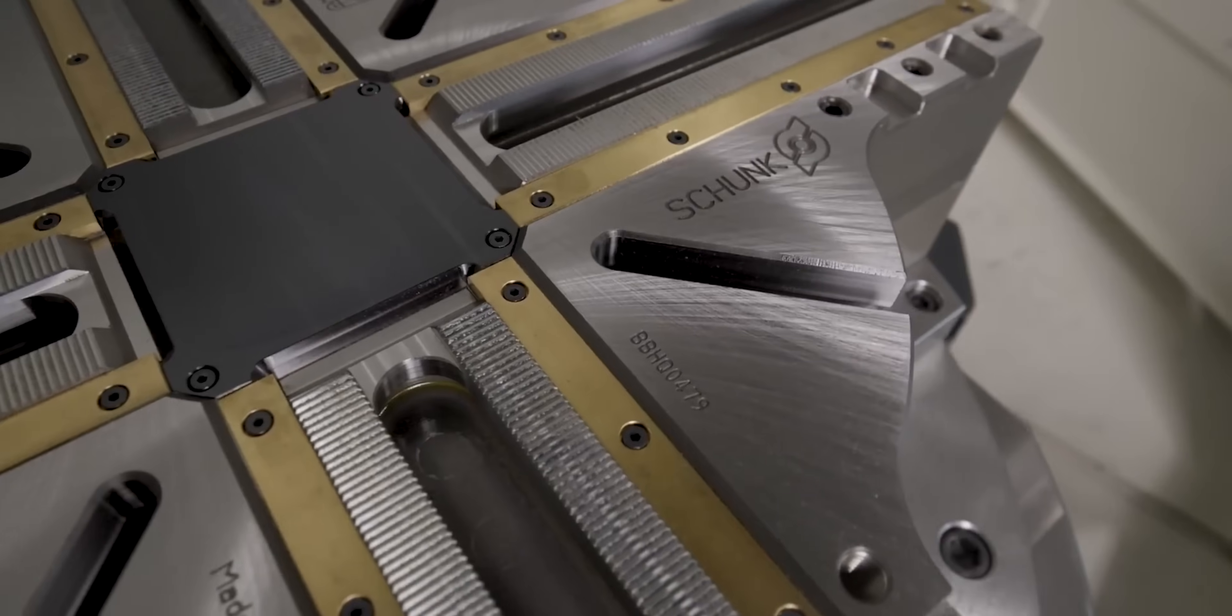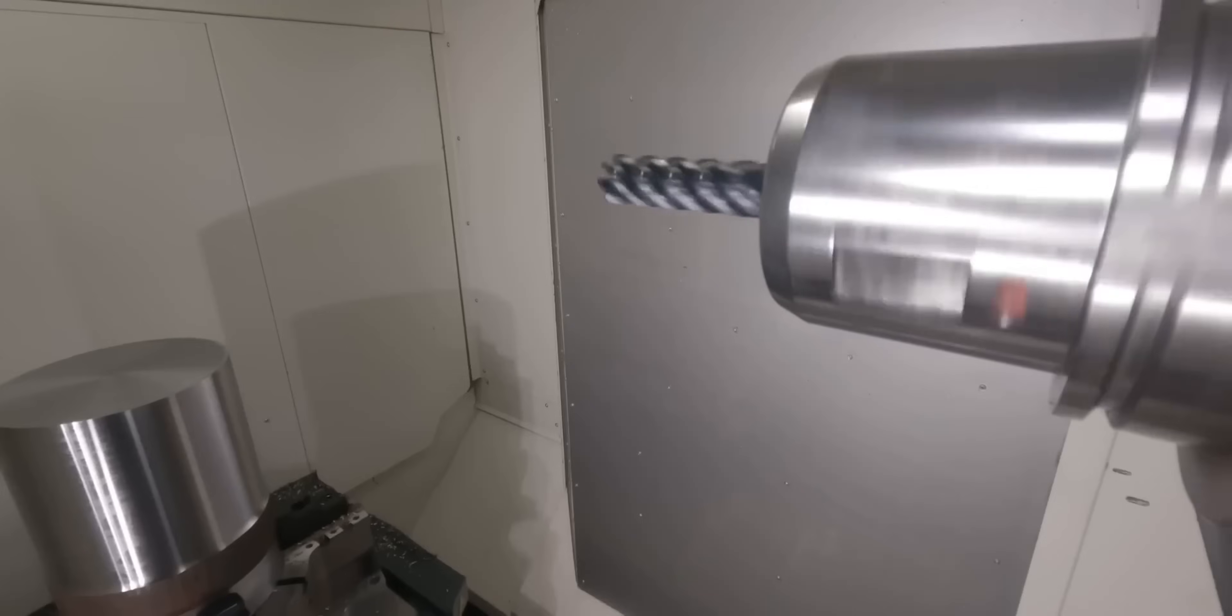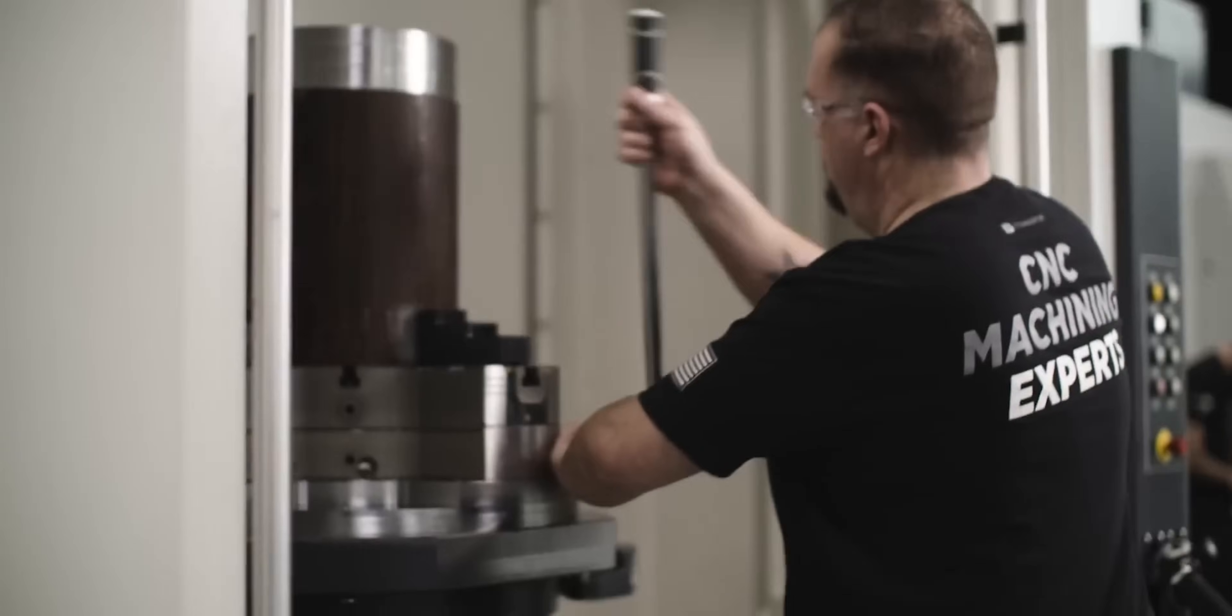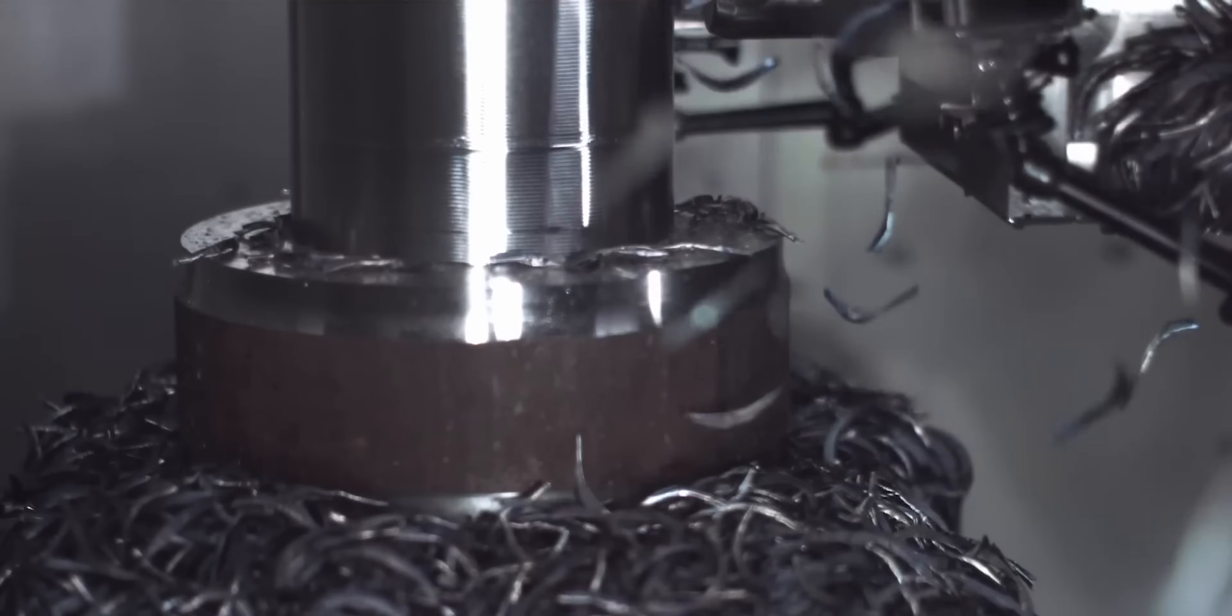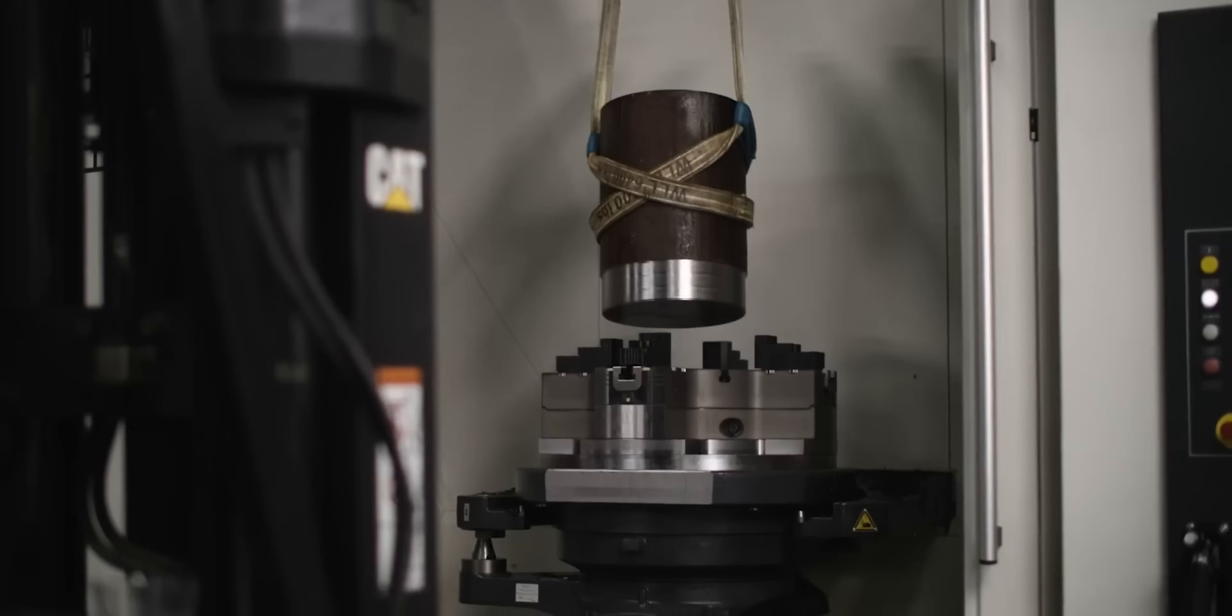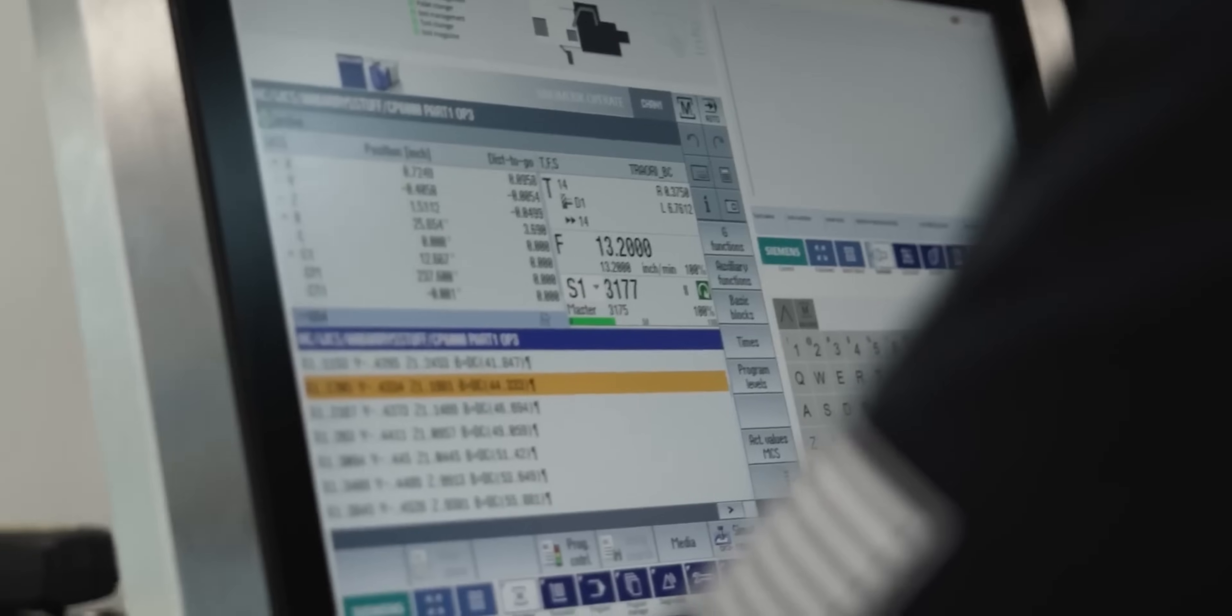machine one to demonstrate our capability to the customer, but that I would not be able to buy tooling or fixturing as we didn't have a contract yet. So I programmed the part with the tooling we had laying around and created the operation so that it could be made in two vices on a four axis mill. Now because